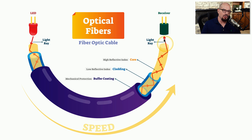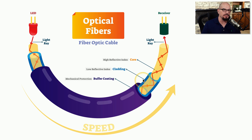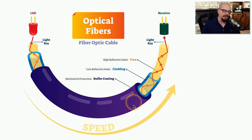The light is bouncing through this particular fiber all the way through that core and to the other side. Around this core is cladding, which has a low reflective index, which means that any light that happens to hit the cladding is usually absorbed by the cladding instead of being reflected back through the core. Around all of this, we have a buffer coating, which protects everything on the inside of that fiber optic cable.